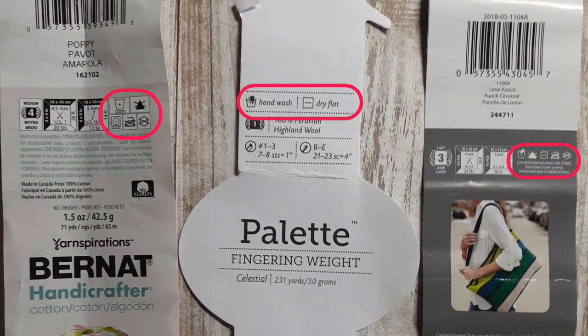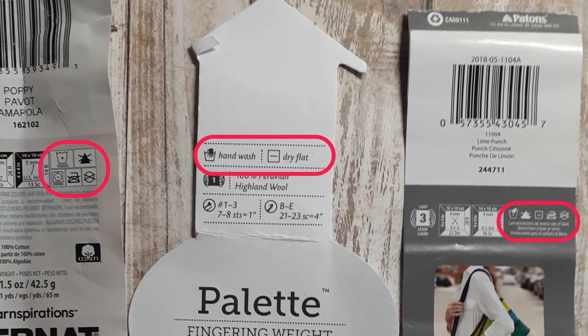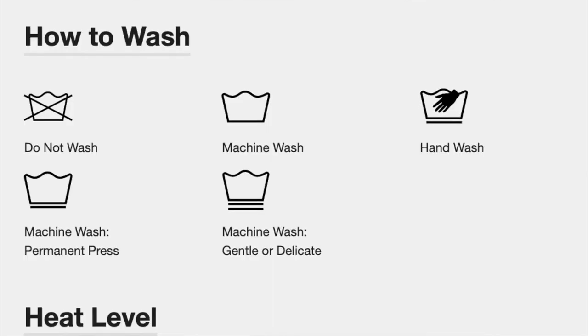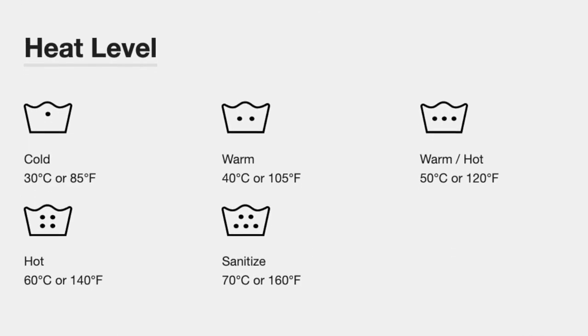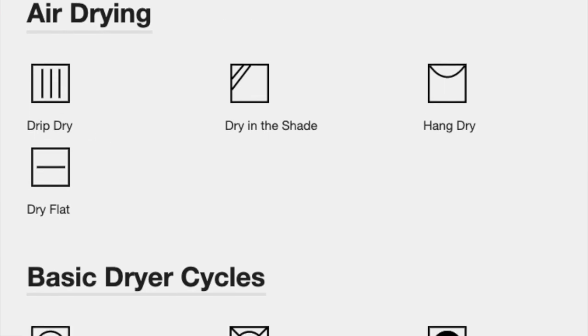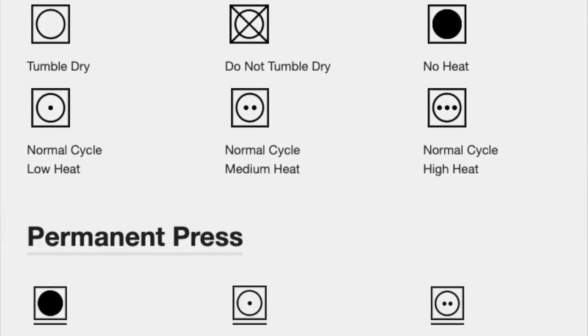Different fibers have different care needs. Acrylic is usually machine washable and dryable, while wool is probably hand washable and you'll want to dry it flat — you don't want to put it in the washing machine and dryer unless the yarn tells you to. This information is either written out with simple care instructions or shown as those care symbols we often see in clothing tags. I've put a link below that breaks down what these care symbols mean. They break down into four basic things: washing, drying, ironing, and dry cleaning. The washing symbols show whether it's machine washable or hand wash, the heat level, and whether you can use bleach. The drying symbols tell you if it's air dry only or what dryer cycles to use. Washing and drying symbols are most commonly found on yarn labels, but you might see ironing and dry cleaning symbols as well.